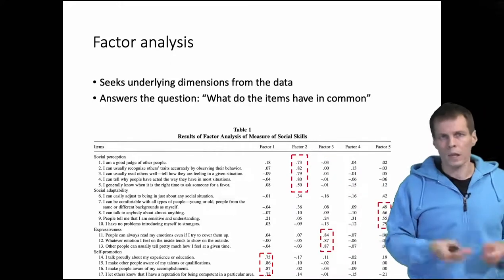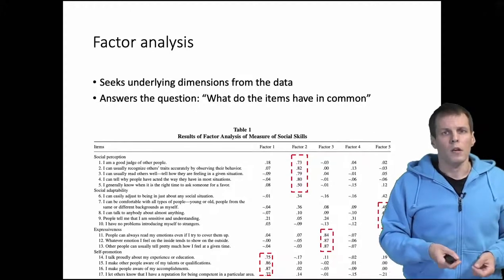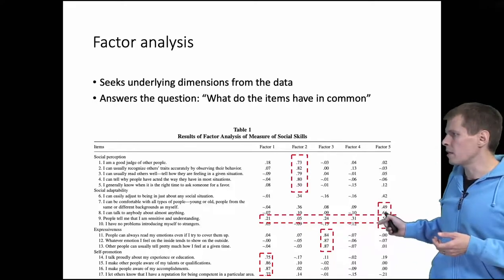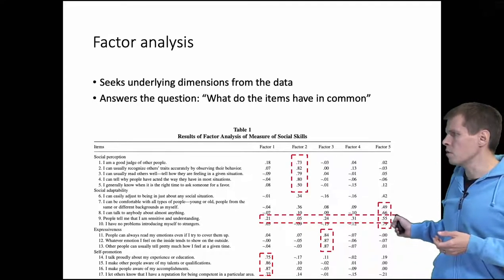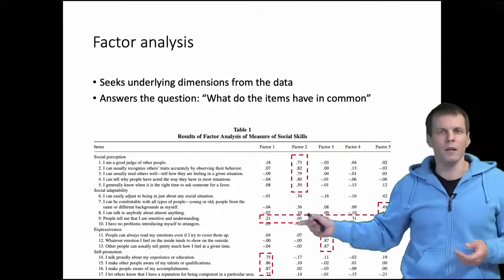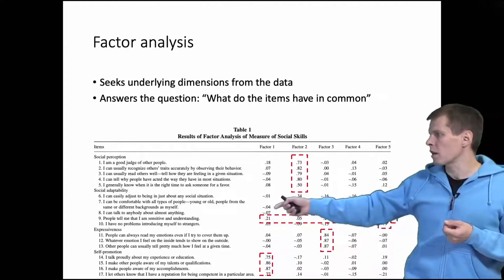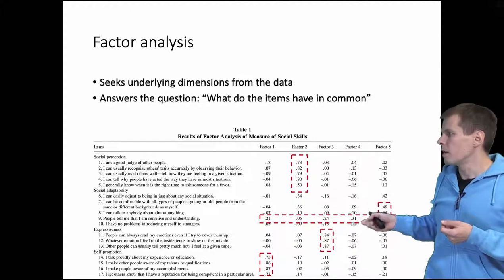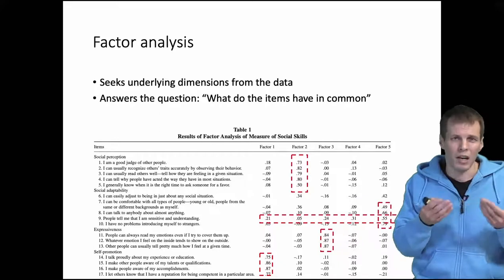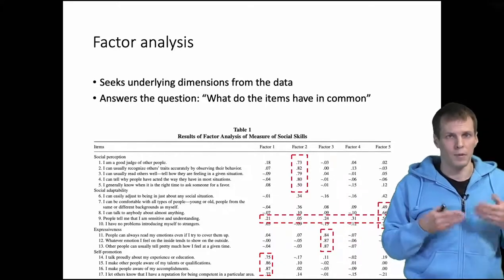What is small? Less than 0.2, less than 0.3 depending on the source is typically considered small. Not all the items work ideally. For example, this item here, 'people tell me that I'm a sensitive and understanding person,' is loading on factor four and factor three and factor one. So it's not cleanly measuring only factor five, which is social adaptability, but it also depends on, for example, expressiveness. So that kind of items we might consider dropping, but it was retained in this study because it had been validated before.